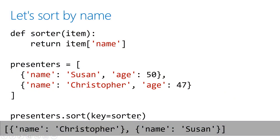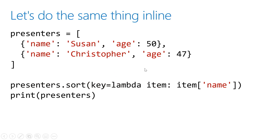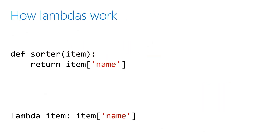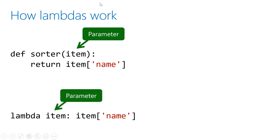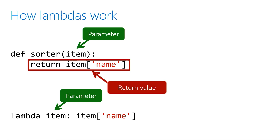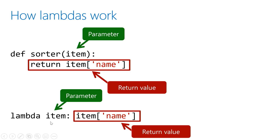So instead of saying key equals Sorter — where Sorter is a function declared separately — you can just say the key is a lambda function. When you specify a lambda function, you specify a parameter item and the value to be returned, which is item name. Before, we had the function Sorter which accepted the parameter item and returned the item's name property. With a lambda, the parameter item is the same for both — the value you specify maps to the parameter you would have passed to an explicit function, and the value returned is what you specify after the colon. So this is basically a lambda function that accepts a parameter called item and returns the item name.